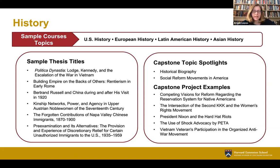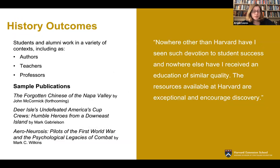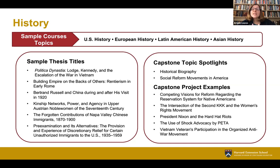Students who come to study history come from different backgrounds and for different purposes. Broadly, two main categories: current high school history teachers pursuing a master's degree for their own enrichment, to improve their teaching, and because it can provide a higher salary; and people who've pursued other careers — lawyers, people in finance, computer programmers — whose passion always was history, and who are at a point in their life where they can come back and devote more time to it.